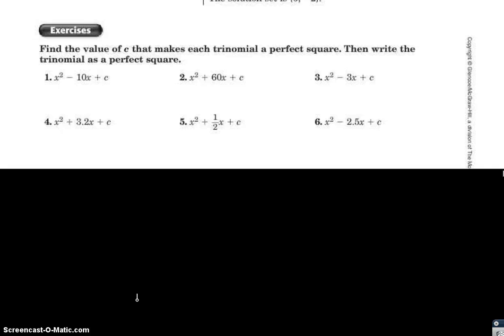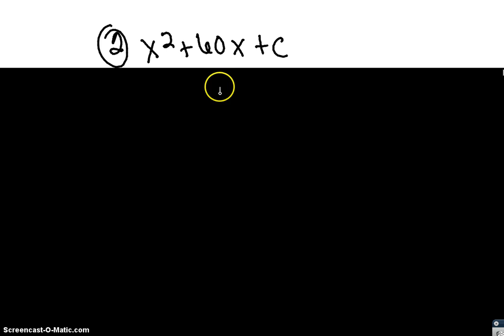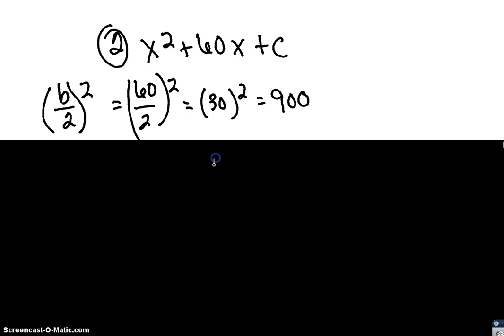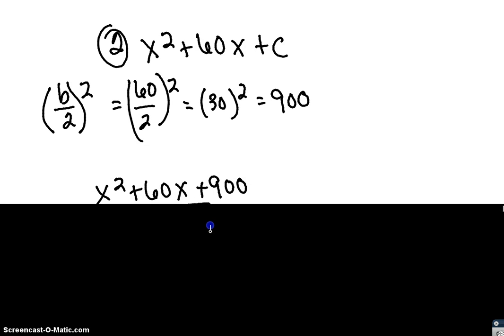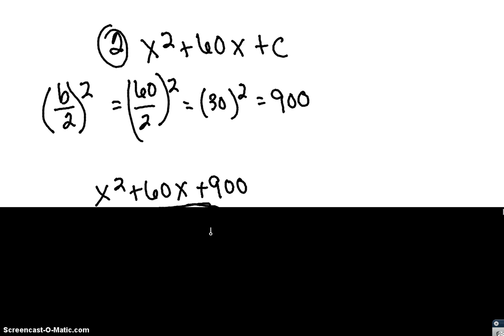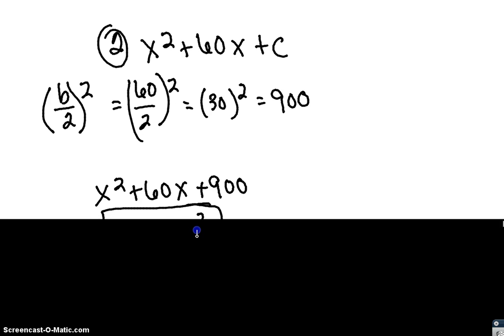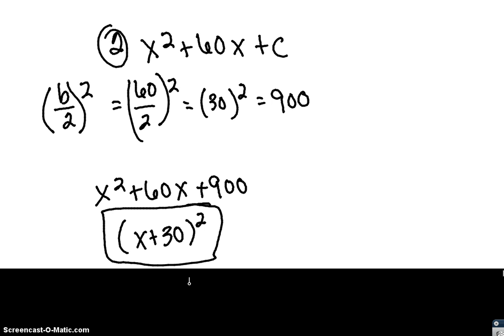Working problem number 2: x squared plus 60x plus c. Using the formula b divided by 2 squared, with b equal to 60: 60 divided by 2 is 30, and 30 squared is 900. So c equals 900, giving x squared plus 60x plus 900. Written as a binomial squared, this becomes x plus 30 squared. Verify by FOILing x plus 30 twice to confirm you get x squared plus 60x plus 900.